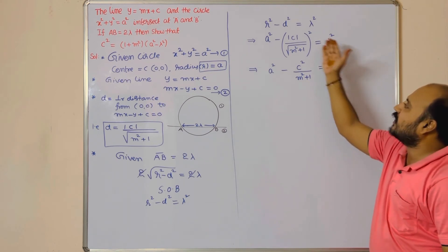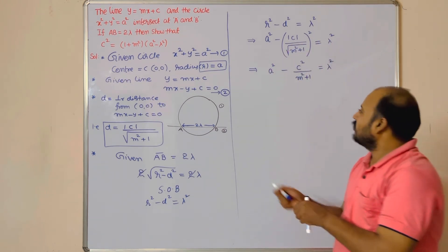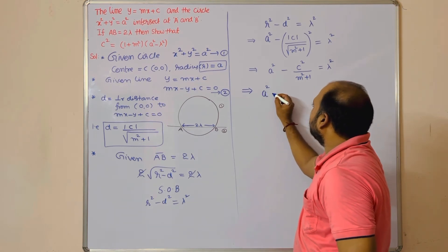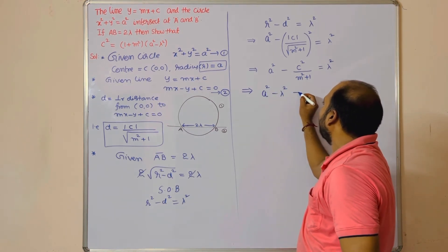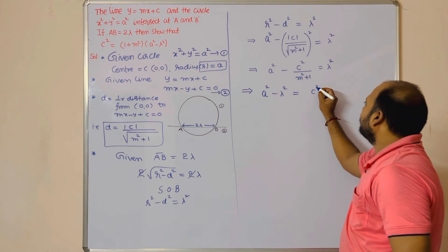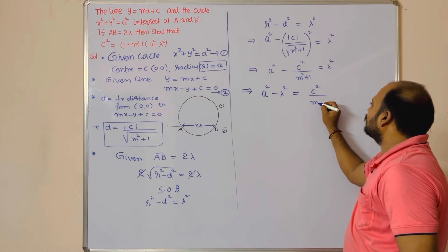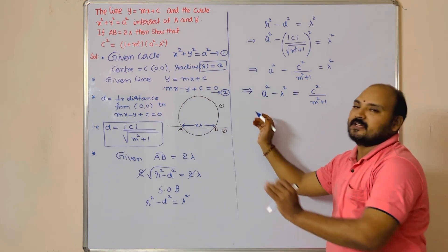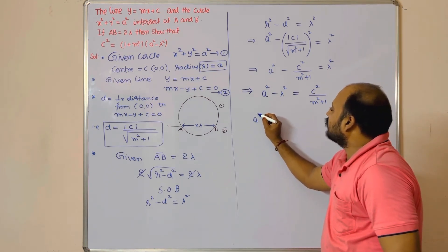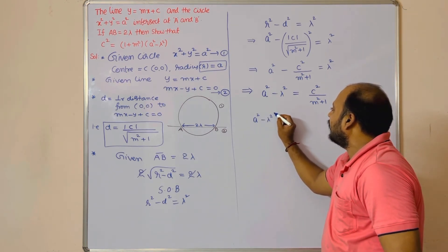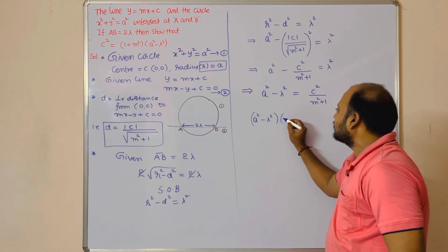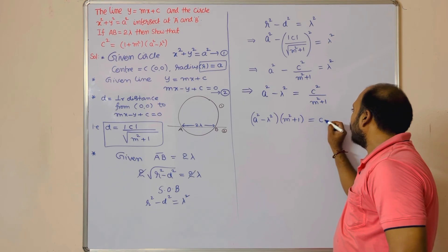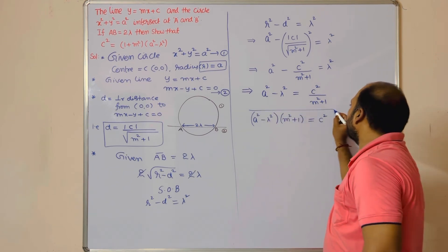So that implies a² - λ² = c²/(m² + 1). Just cross-multiply the terms. So (a² - λ²)(m² + 1) = c². Hence proved. Not only they are asking to prove this, students.